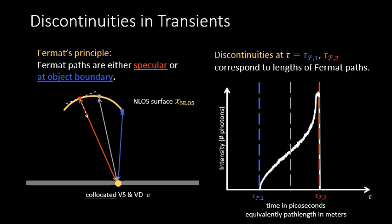Even though we cannot measure these two types of photons, Fermat and non-Fermat, separately, given a transient, we can still identify the lengths of all the Fermat paths that contribute to it by finding the times where the transient is discontinuous.